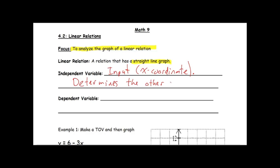When we're talking about the other value, we're talking about the dependent variable, which is the y. Our output is generated from the input. So the output is our y coordinate of the points that we will plot for these different lines. This is also the value that is determined by the input.